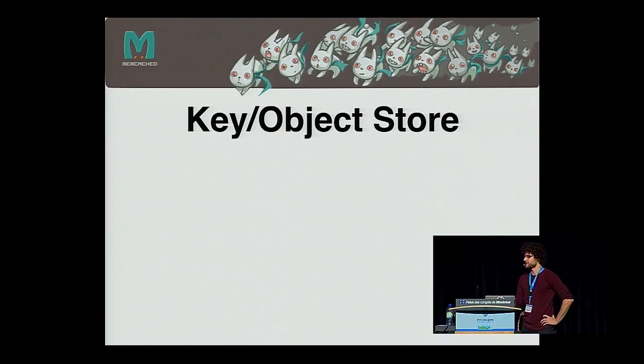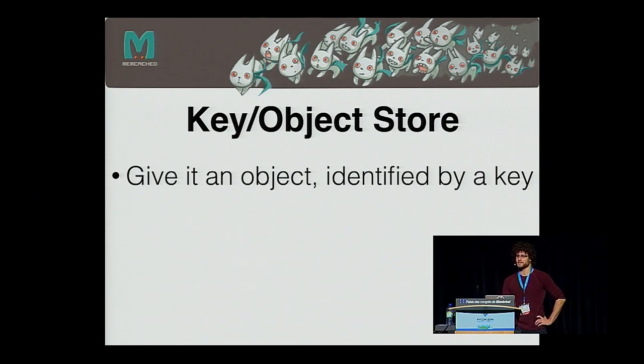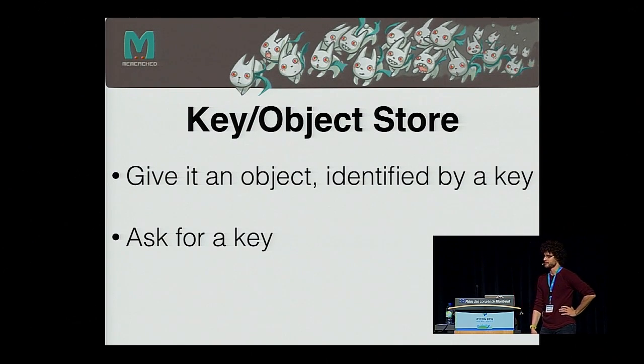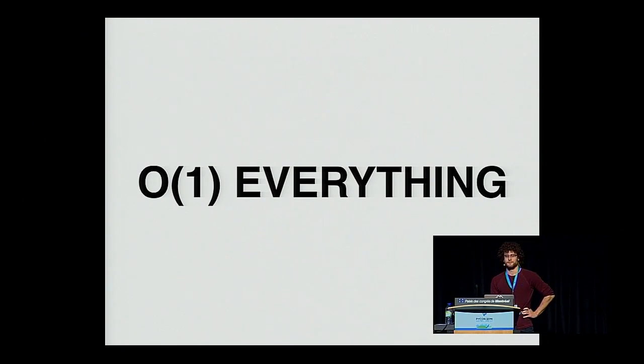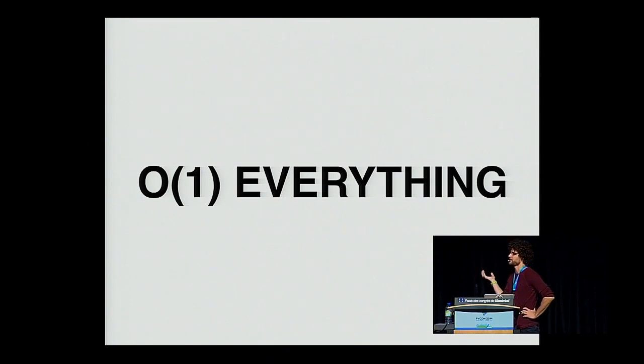Memcached is a key-object store. Very straightforward — you give it an object identified by a key, then later you can ask for a key and it will give the associated object back to you. It has the notion of expiration, so you only get the object back if it has not expired. If memcached had a tagline, it would be O(1) everything. This means that every operation — setting an object, retrieving an object, deleting an object — is done in constant time, no matter how full the cache is.